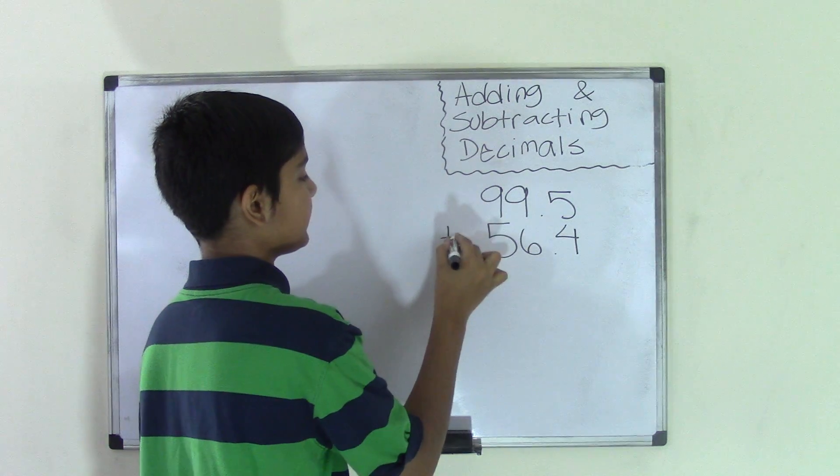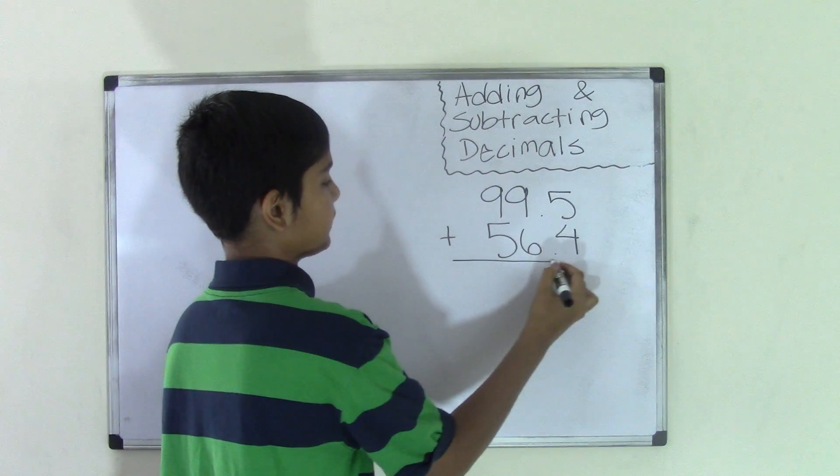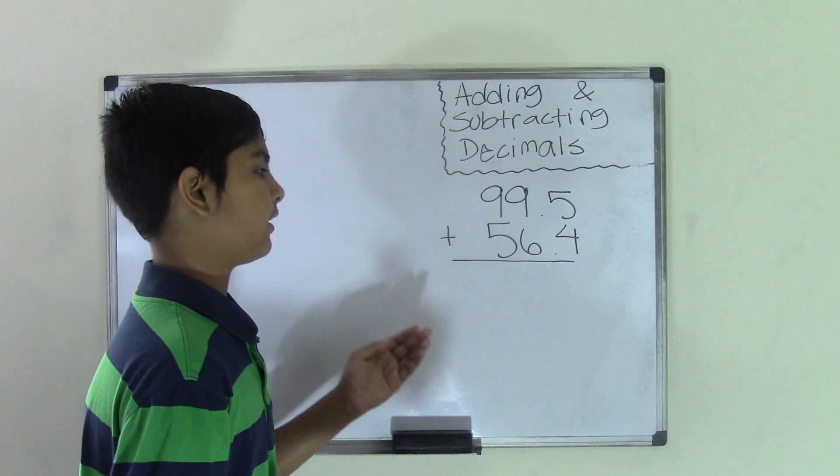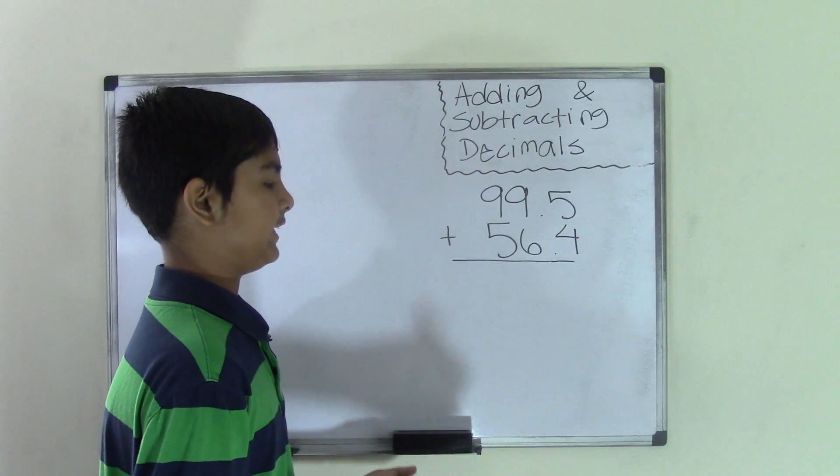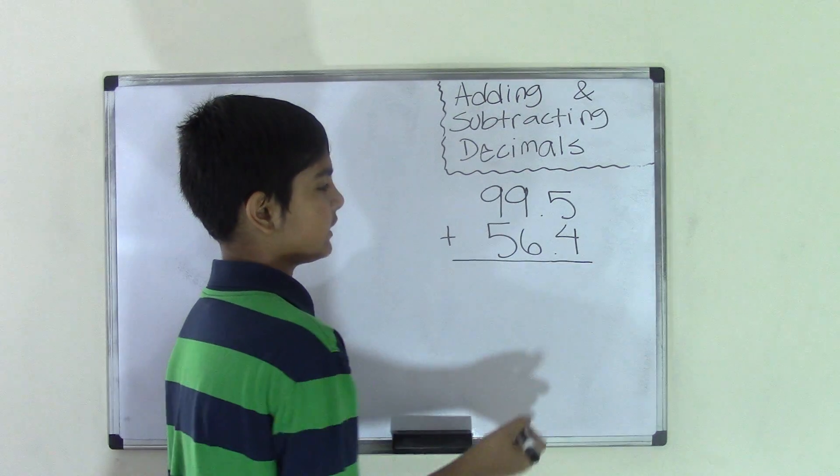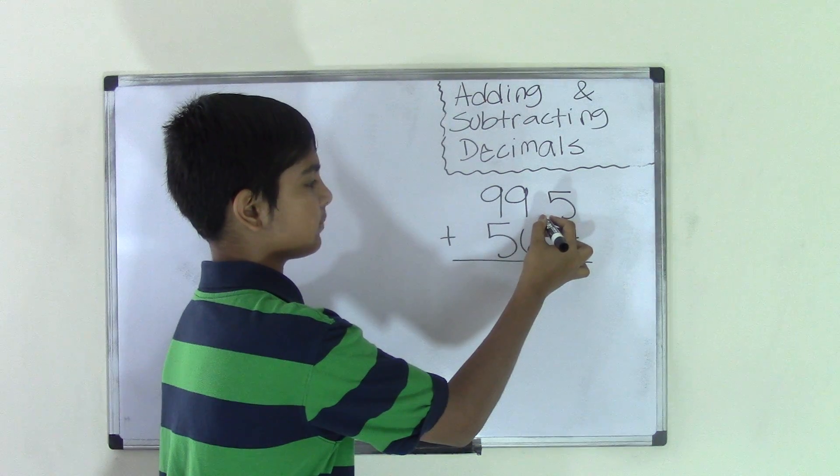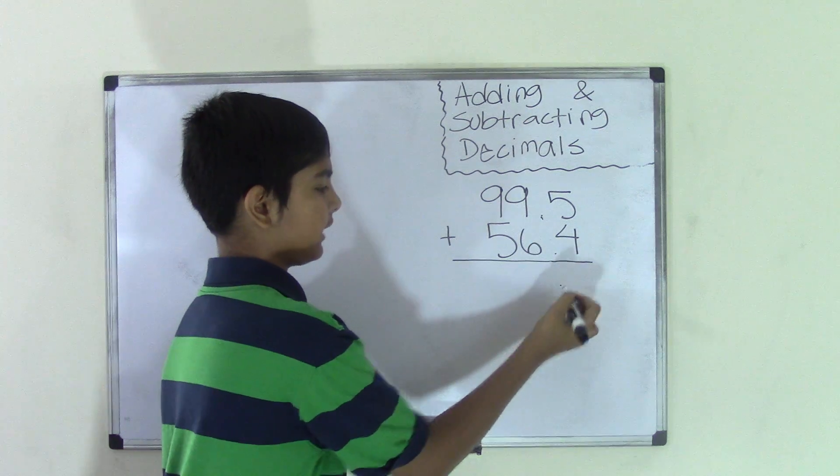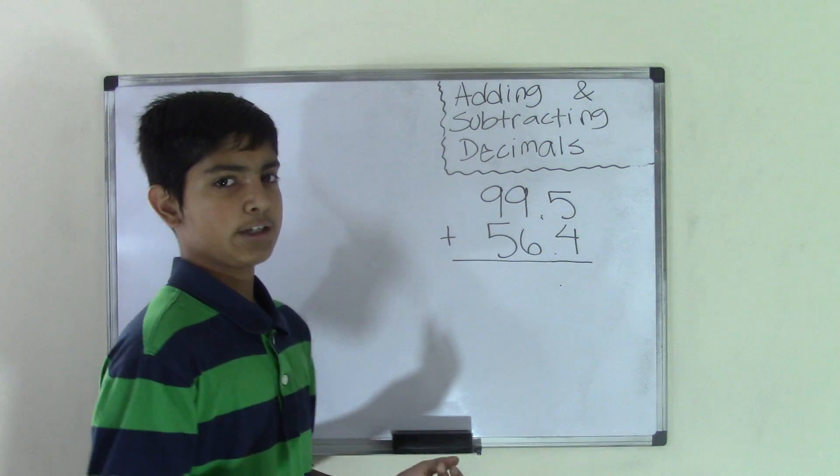Now we have to align the decimal points. So over here, the decimal points are already aligned. So what we need to do now is we need to bring down the decimal point. So bring down the decimal point straight down.